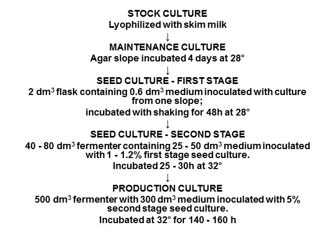Preparation of seed culture, which is the first stage of inoculum preparation, is as follows: a 1 cubic decimeter flask containing 0.6 cubic decimeters of medium is inoculated with culture from stock, then incubated with shaking for 48 hours at 28°C. At the second stage, seed culture is again prepared from the first stage seed culture, in which a 40 to 80 cubic decimeter fermenter containing 25 to 50 cubic decimeters of medium is inoculated with 1 to 1.2% culture from the first stage. It is incubated for 25 to 30 hours at 32°C.